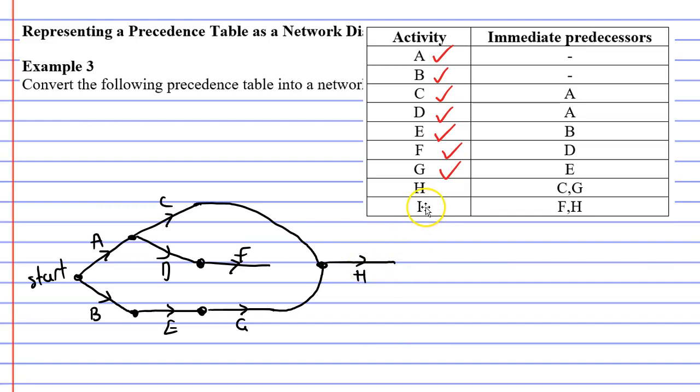Especially when you look at the very last activity here, activity I, you can see that it comes after activities F and H. Because activity F is trapped, there's no way we can bring this edge out and connect it to the same vertex that H connects to. So how are we going to fix this problem?